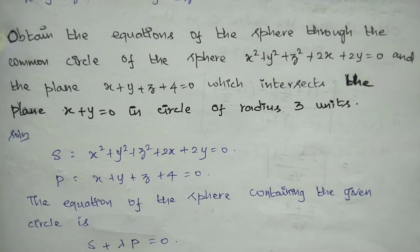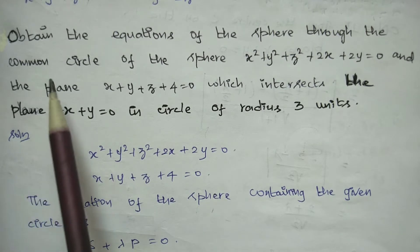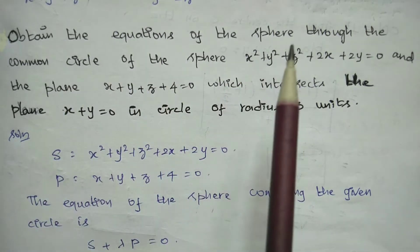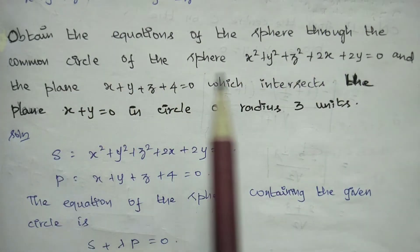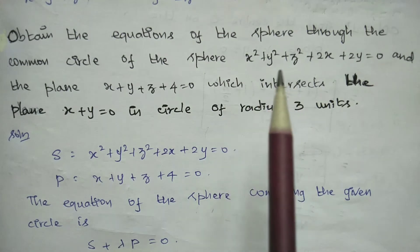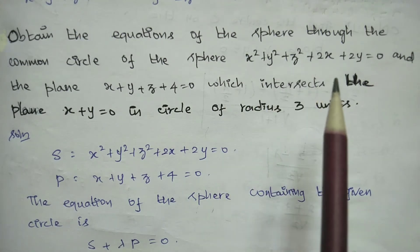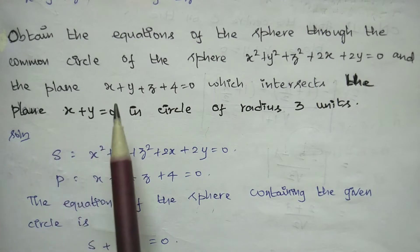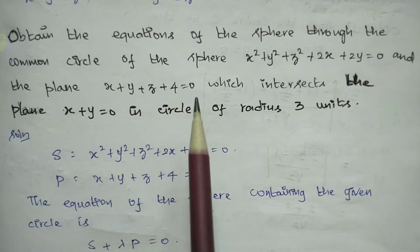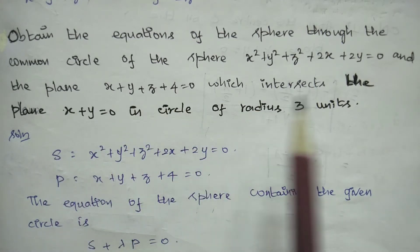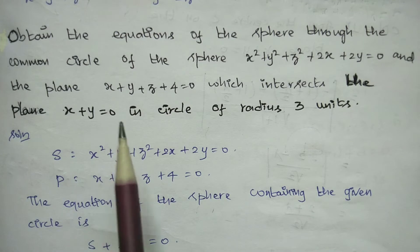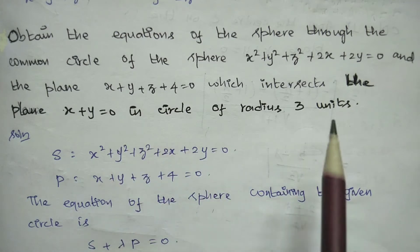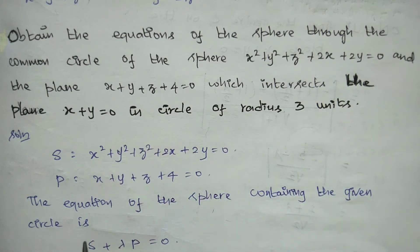Greetings everyone. Today we have an important question in our sphere chapter. Obtain the equations of the sphere through the common circle of the sphere x² + y² + z² + 2x + 2y = 0 and the plane x + y + z + 4 = 0, which intersects the plane x + y = 0 in a circle of radius 3 units.